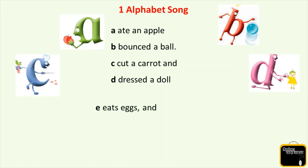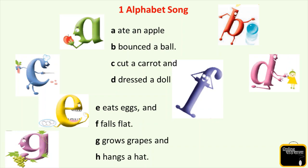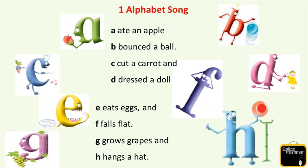E eats eggs. And F falls flat. G grows grapes. And H hangs a hat. Yes, E likes to eat eggs. And F is falling down, F is falling flat.